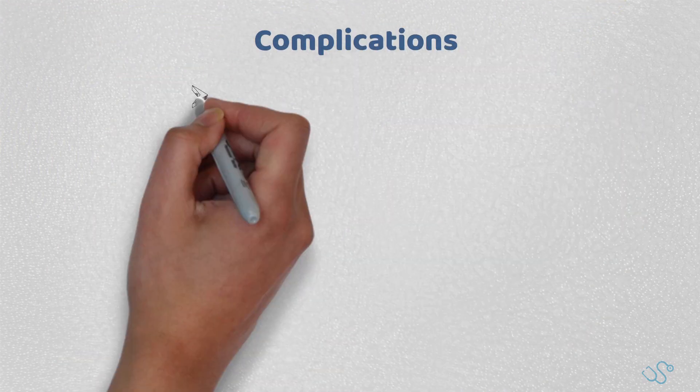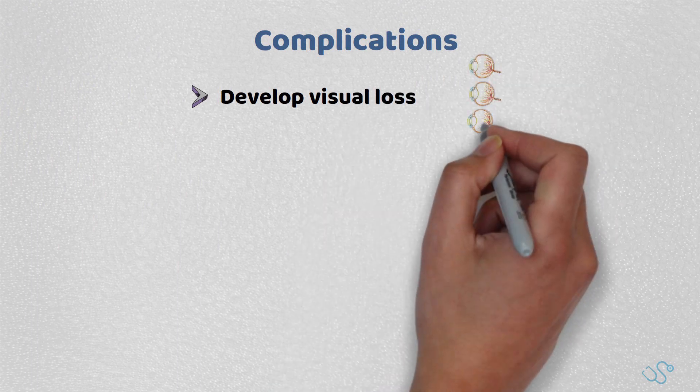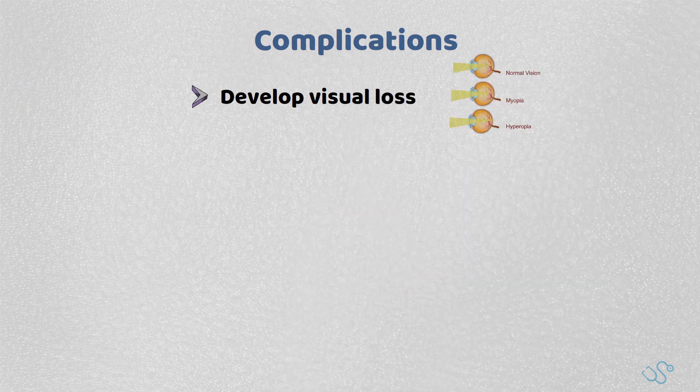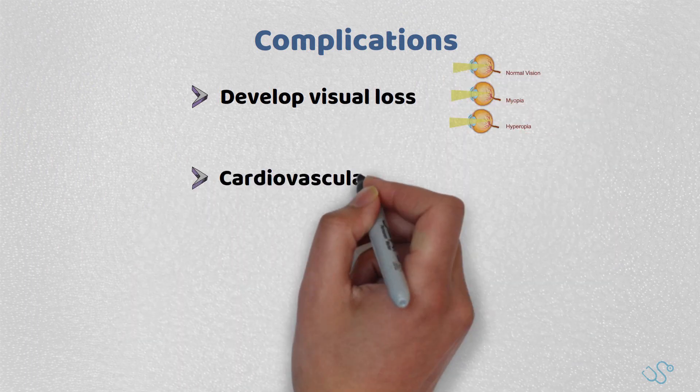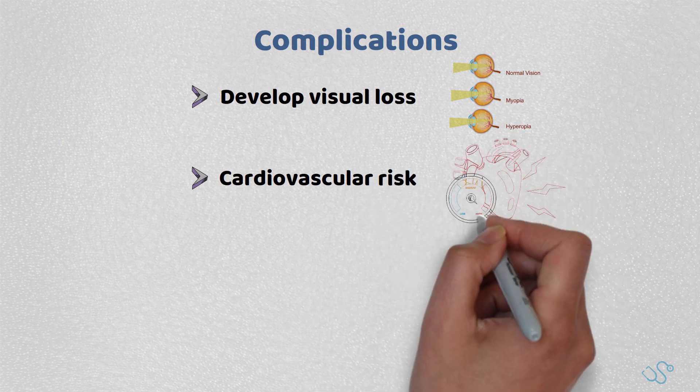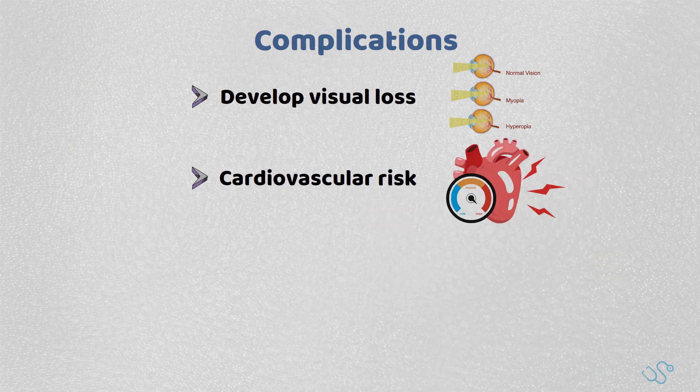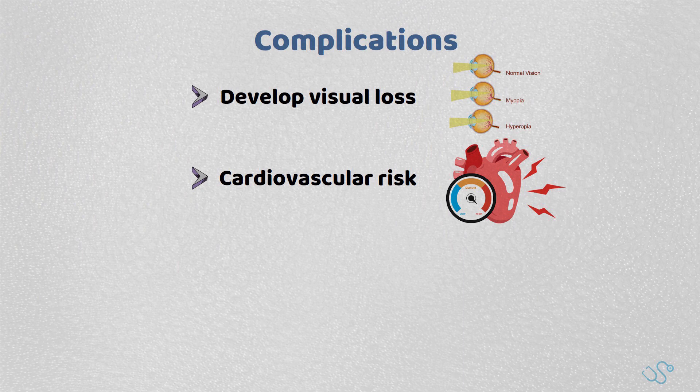In terms of complications, people often can develop visual loss given the involvement of the ophthalmic arteries. There is also a significant cardiovascular risk, with 10-20% of patients being at risk of developing aortic aneurysms or dissections, as well as an increased risk of cardiovascular diseases such as strokes, myocardial infarcts, and heart failure.